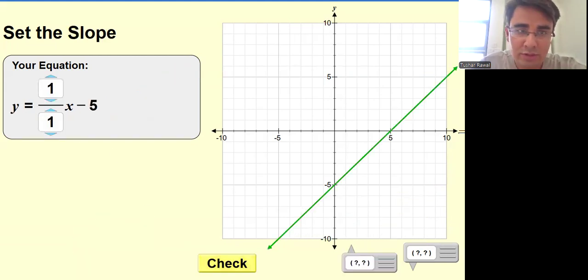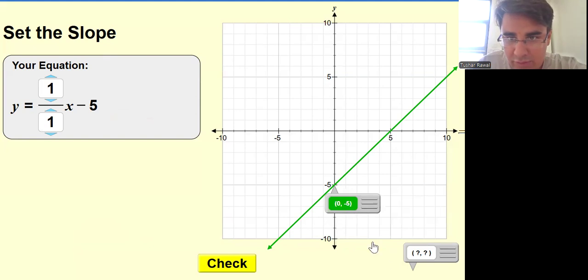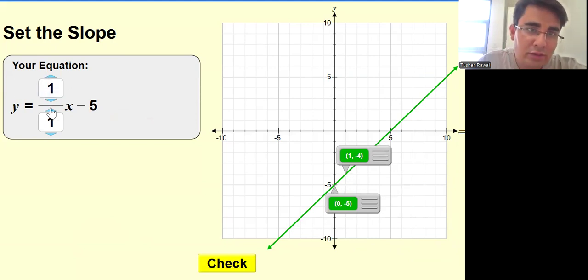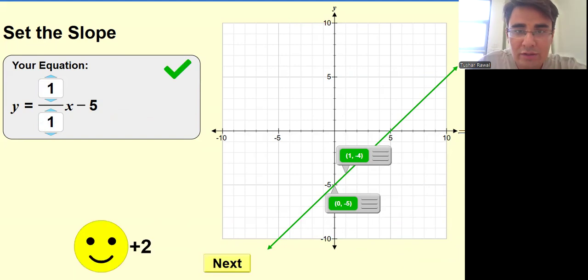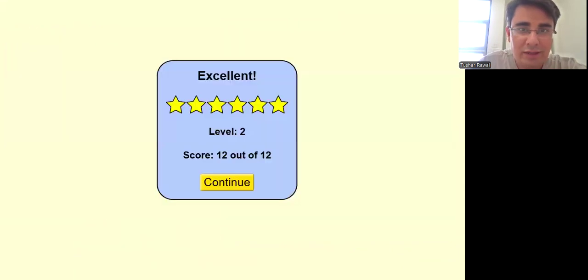Last question for this particular video. Set out the slope. You guys tell me what is the slope. So that's my first reference point. My second reference point is just above. So one up, one right. So one up, one right. It's already there. Let me just check. That's it.